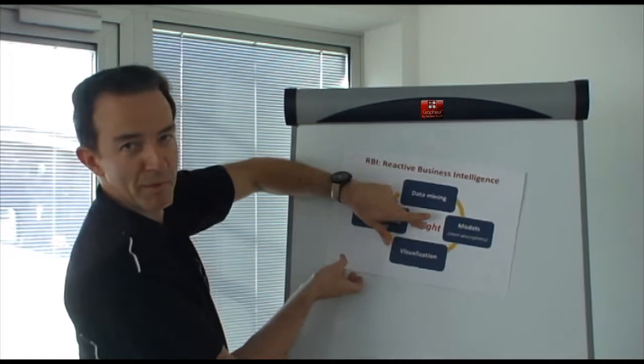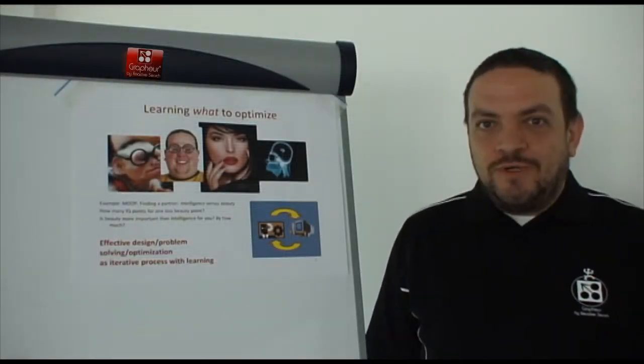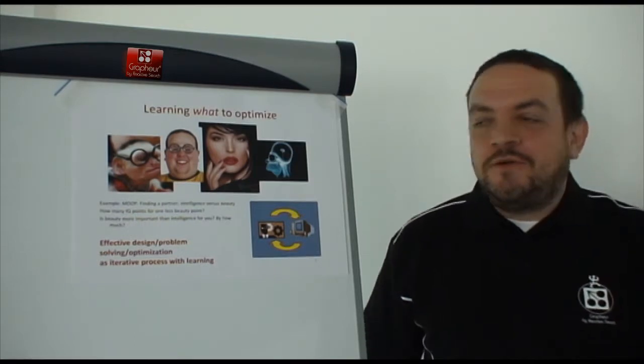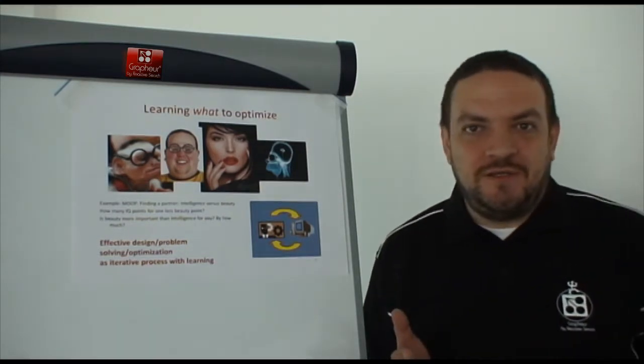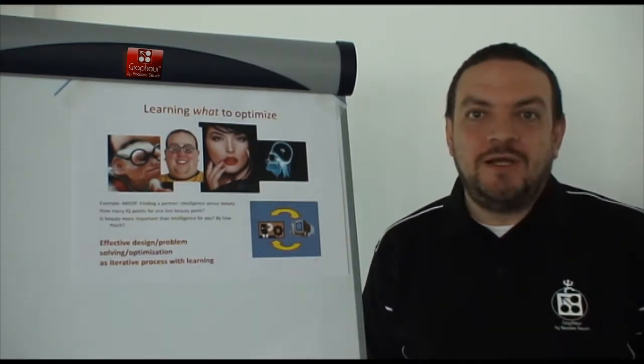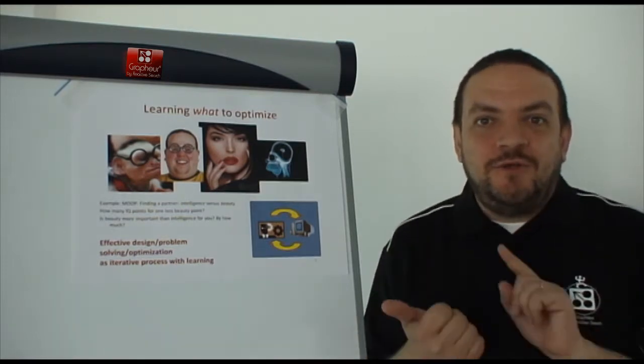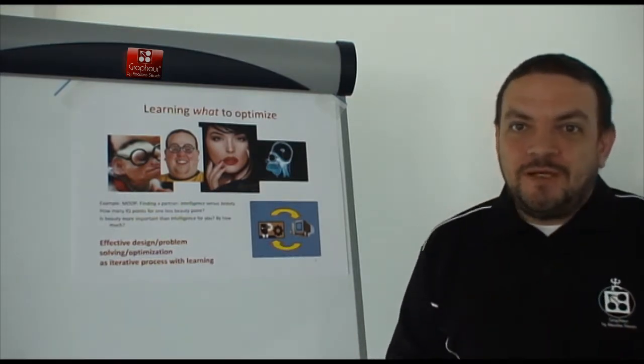Does it work? Let's come to a real life example. Say that you want to find a partner, a boyfriend, a girlfriend. You may have two objectives in the person you are looking for. You want an intelligent partner, you want a beautiful partner. Well, those two objectives cannot usually be achieved together. It's difficult to find them together in the same person.